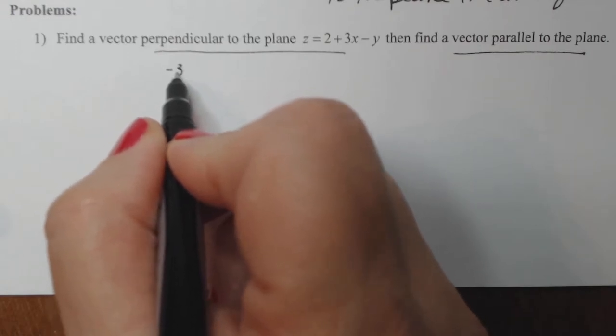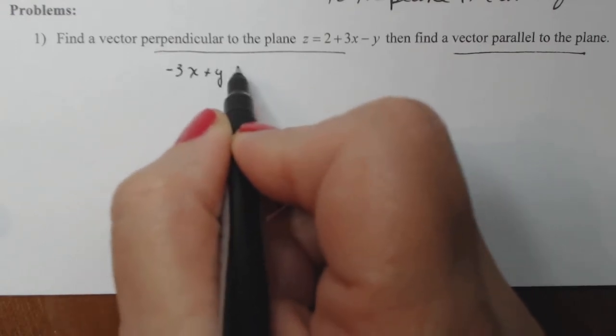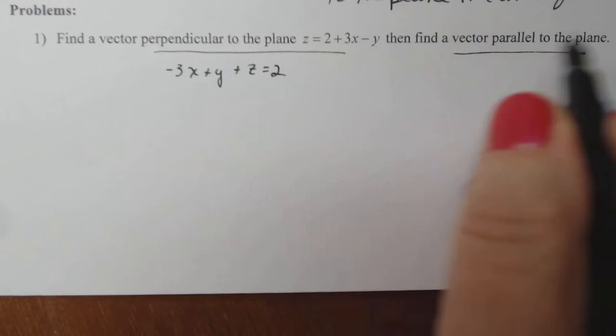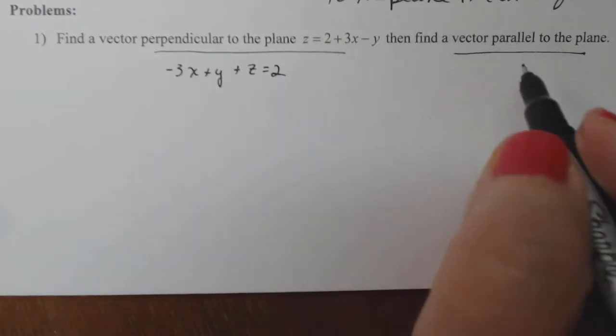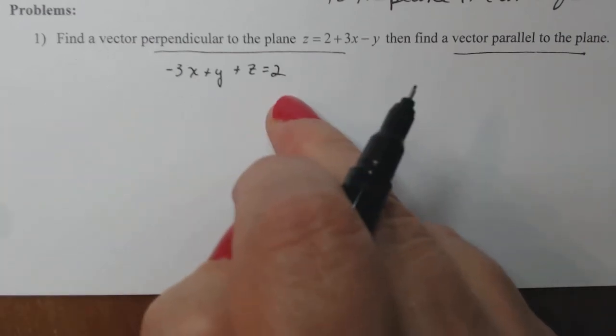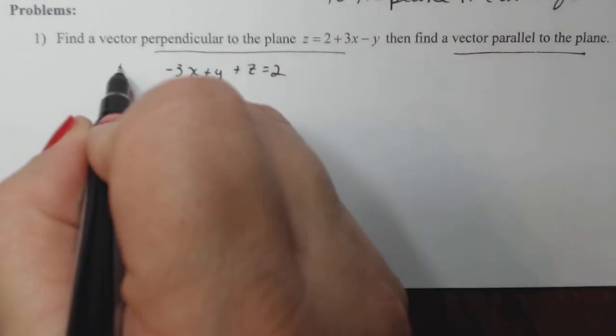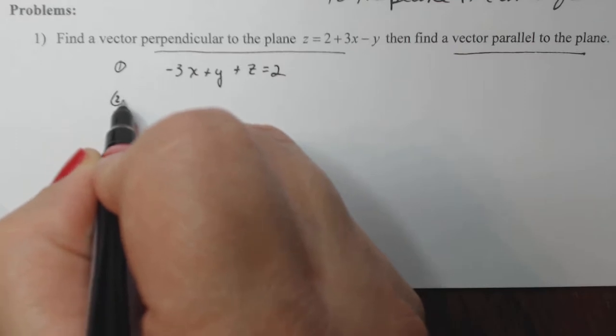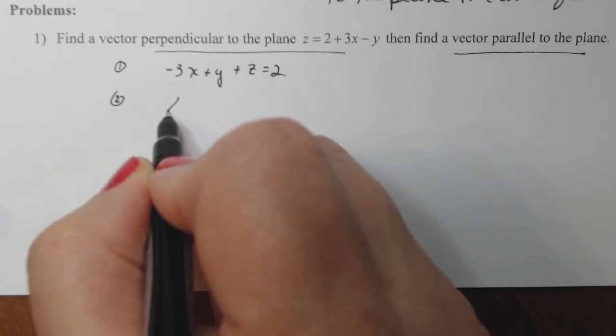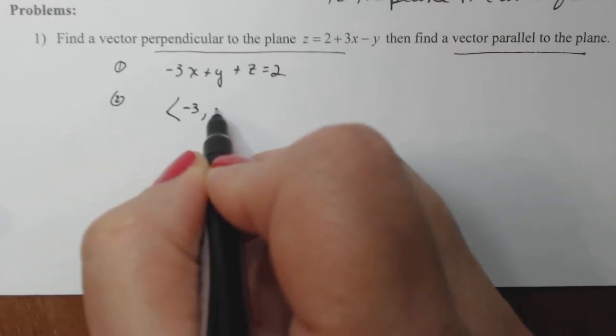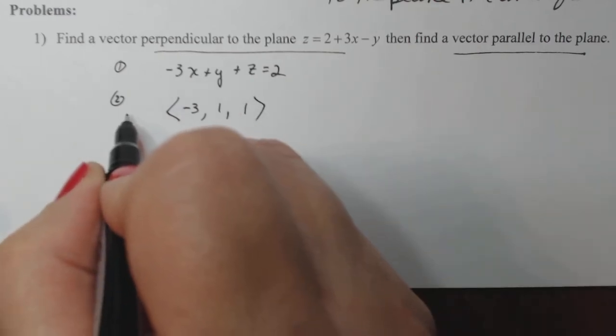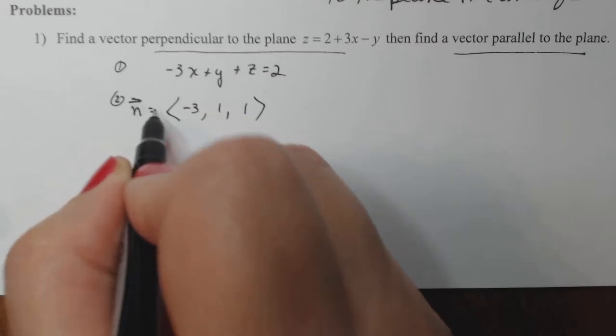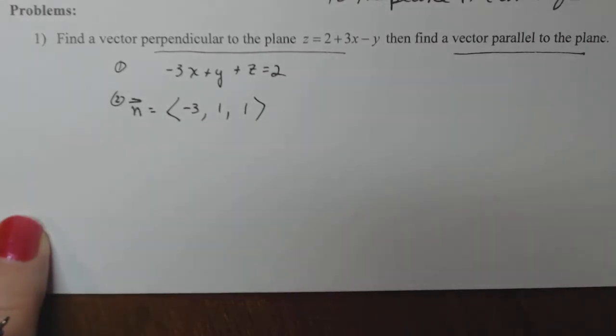So I have minus 3x plus y plus z equals 2. Let me make sure I have all my signs right. That changed the negative, that's a positive and that's still positive. So there I've rewritten step one. And then step two is just peel off the coefficients of the variables. And that actually is my vector, my normal vector perpendicular to the plane. It really is that easy. Please don't make this harder than it is.